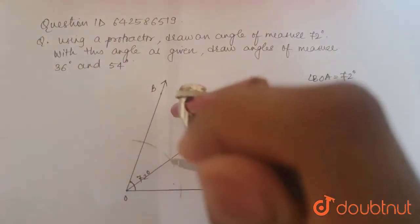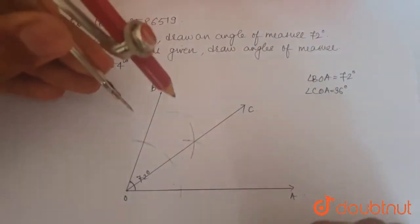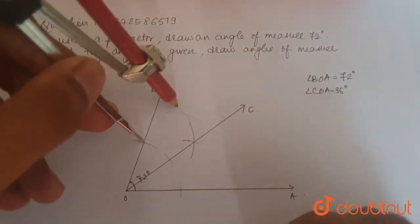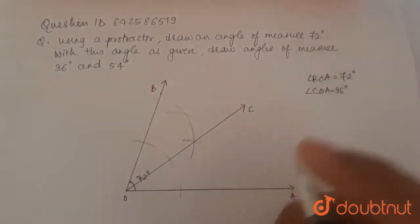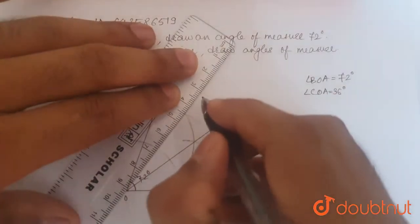And taking these arcs on the compass and keeping the distance same will make two more arcs that would intersect like this.